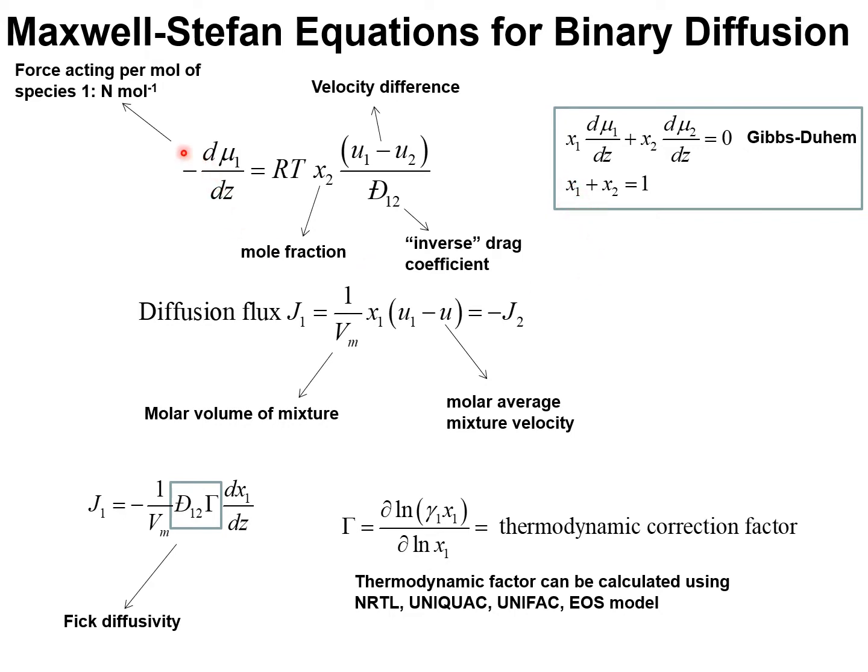In the Maxwell-Stefan formulation, the force acting per mole of species 1 is balanced by friction. The frictional term must be proportional to the composition and we take that proportionality to be represented by the mole fraction of component 2. The physical significance of the Maxwell-Stefan diffusivity, where we use the symbol D with a line through it, is that it represents an inverse drag coefficient.